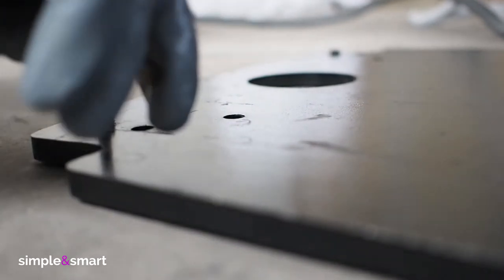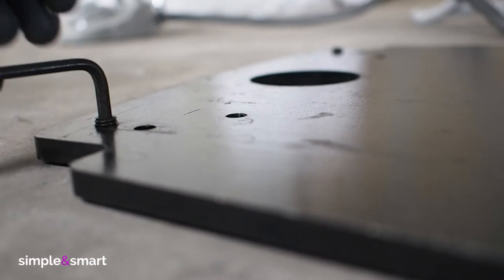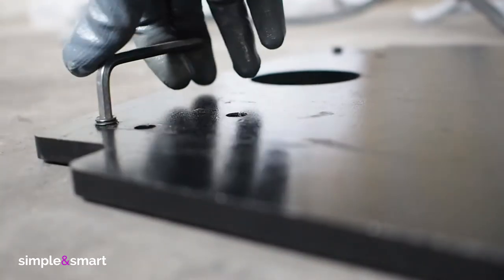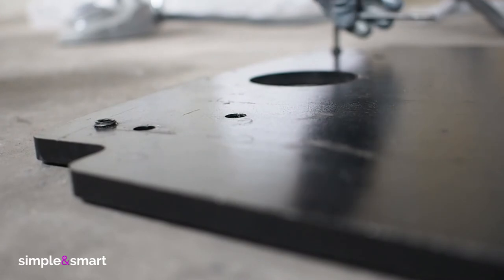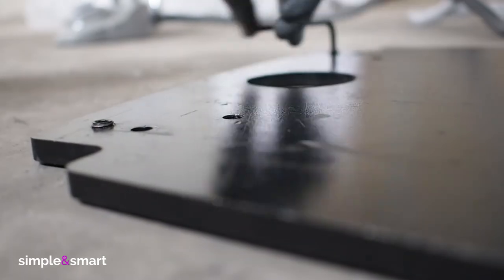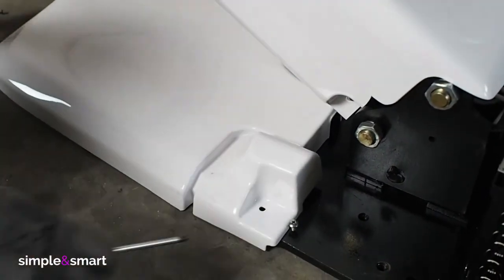You can now adjust the chair base just working on the regulator screws on the base. This operation must be done if the floor surface is not regular. This operation will permit to stabilize the chair and avoid shaking or incorrect balance of the instrument arm. Place back the plastic cover and lock it with its screws.